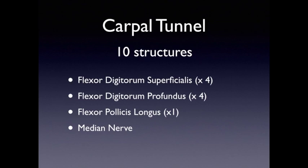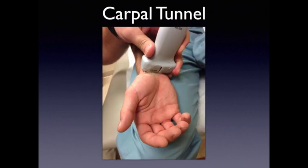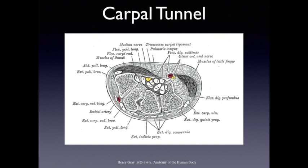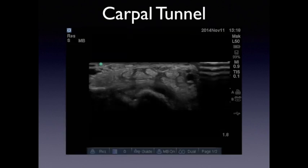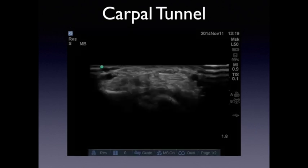The carpal tunnel has ten structures: four tendons of the flexor digitorum superficialis, four of the flexor digitorum profundus, one from the flexor pollicis longus, and the median nerve. You're going to be scanning in the transverse orientation over the wrist. Laterally you can see the radial artery with Doppler flow, and as you move medially you'll see that characteristic honeycomb appearance — that is the median nerve, as all nerves look like that. Then you see the tendons within the carpal tunnel.